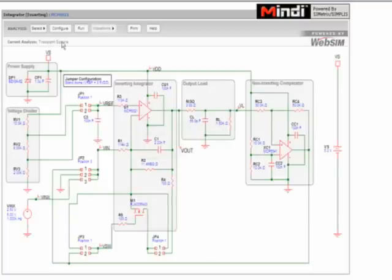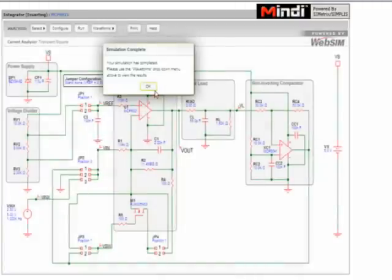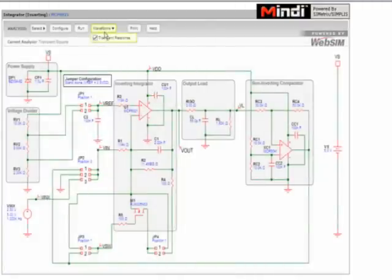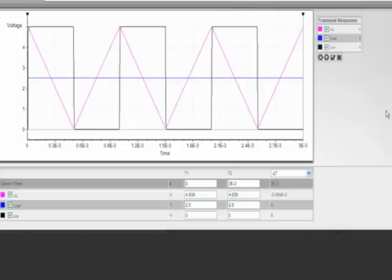For analysis, we will run the simulations. We will now look at the transient response under the waveform button. The graph simulates the performance of the MCP6021 when configured as an integrator.